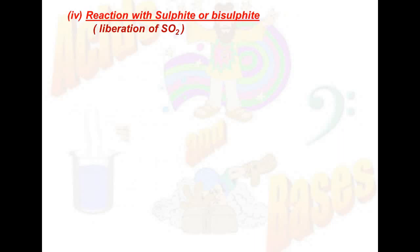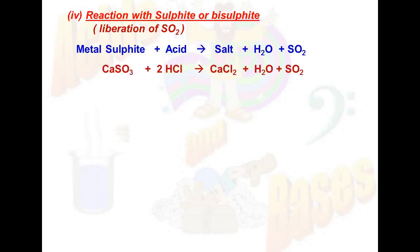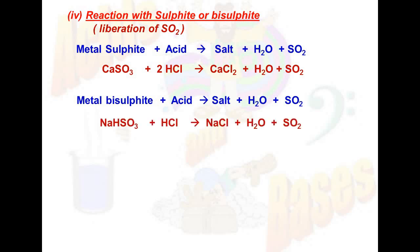The next method: reaction with sulfites or bisulfites. Whenever dilute acids, especially HCl and dilute sulfuric acid, react with metal sulfites, they produce salt, water, and sulfur dioxide gas. For example, calcium sulfite reacts with HCl to give calcium chloride salt plus water and sulfur dioxide gas. Similarly, sodium bisulfite when reacted with HCl produces NaCl salt, water, and sulfur dioxide gas.